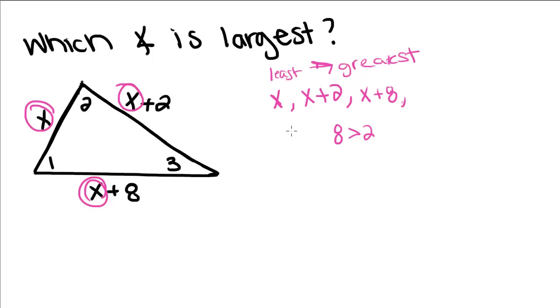Our angles opposite these sides are going to be the same way. So that means since x plus 8 is the greatest side, the angle opposite x plus 8 is going to be the greatest angle. So angle 2 is largest.